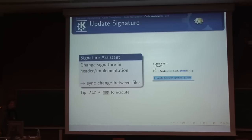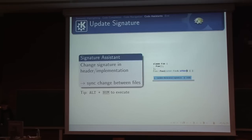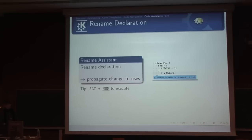Assistance features are little helpers that take on mundane tasks. For example, if you separate the implementation from the declaration and add something like const foo parameters to the constructor, KDevelop asks: do you want to update the declaration signature? Press Alt+1 and it automatically updates the declaration. The same goes for renaming variables — if you rename a member variable from myVar to myVar2, it offers to rename all users of that variable. This is a new feature in KDevelop 4.2.